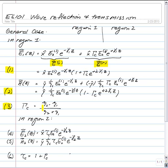The reflected electric field and magnetic field are a function of the complex reflection coefficient, which in general is a function of the wave impedance in region 2 and the wave impedance in region 1. In region 2, you have the transmitted electric field given by equation 4 and the transmitted magnetic field given by equation 5, where the transmitted fields are a function of the transmission coefficient — which is in general complex as well — given by equation 6.